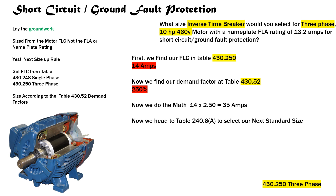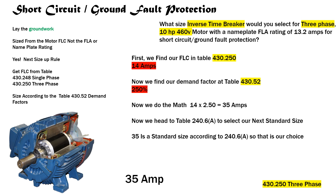We head to table 240.6(A) to select our next standard size. When we get there we find out that 35 is actually a standard size. That may not be one we use in the field very often, but when you're testing or if this were truly code-legal, that would be the size breaker or fuse you'd have to select. So our answer is 35 amps for short circuit ground fault protection.